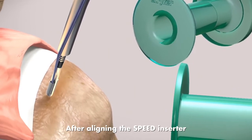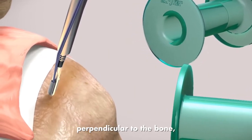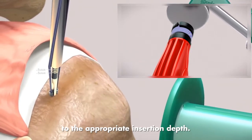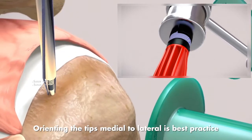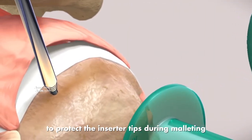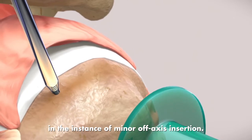After aligning the speed inserter perpendicular to the bone, mallet the speed inserter handle to the appropriate insertion depth. Orienting the tips medial to lateral is best practice to protect the inserter tips during malleting in the instance of minor off-axis insertion.